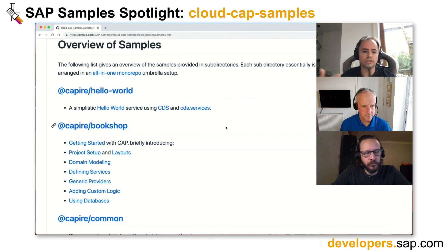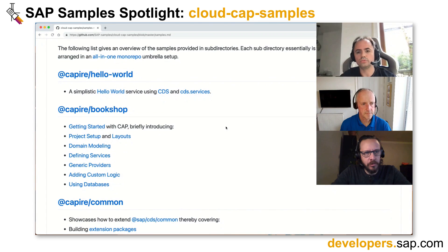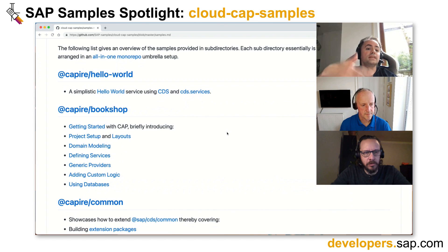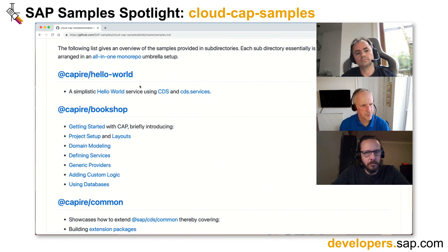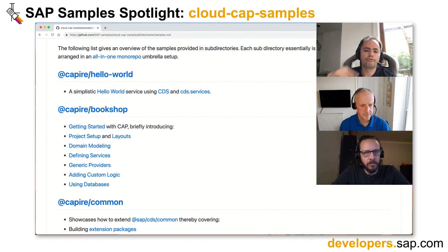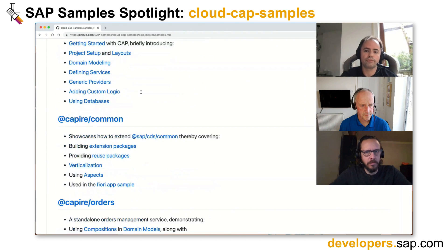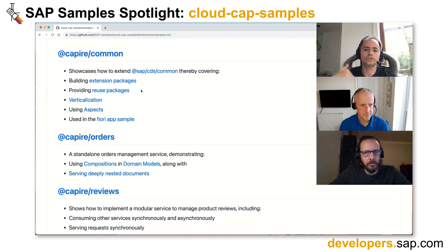Starting off with project setup and layout, but then also how to do data modeling, how to define services — all that stuff is shown there. Before that there's even a Hello World example, which is the absolute minimal example, the one-line Hello World. That ties in with CapHire, the CAP documentation, because there's also a Hello World starter application there. From CapHire, which is the name of our documentation package, we refer to these samples, and the samples here refer to the documentation in CapHire.